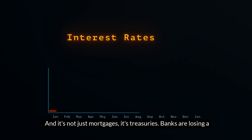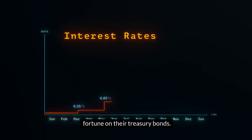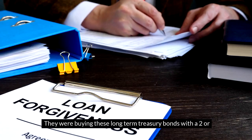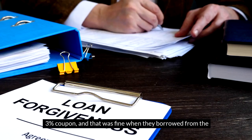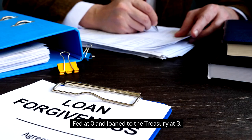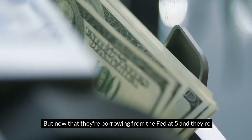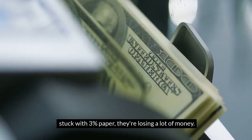It's not just mortgages, it's treasuries. Banks are losing a fortune on their treasury bonds. They were lending money to the government, buying these long-term treasury bonds with a two or three percent coupon. That was fine when they borrowed from the Fed at zero and loaned to the treasury at three, but now that they're borrowing from the Fed at five and they're stuck with three percent paper, they're losing a lot of money.